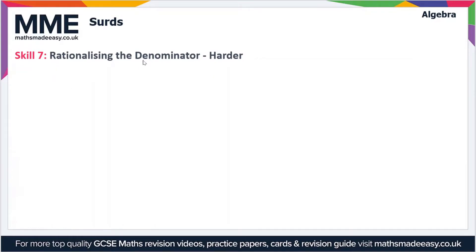So this is where we're rationalising the denominator. But the denominator is made up of more than just a surd. So as an example, let's use 5 over 3 plus root 5.